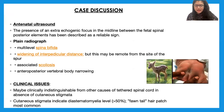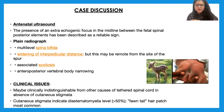On antenatal ultrasound, the presence of an extra echogenic focus in the midline between the fetal spine posterior elements has been described as a reliable sign. On plain radiograph, findings may include multiple level spina bifida, widening of the interpedicular distance, and scoliosis. Clinically, cutaneous stigmata indicate the diastematomyelia level in more than 50 percent of cases, and a fawn tail is seen as shown in the picture.